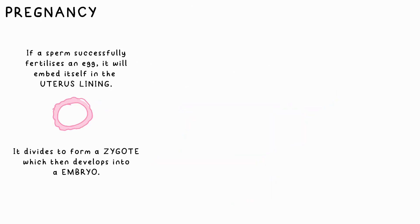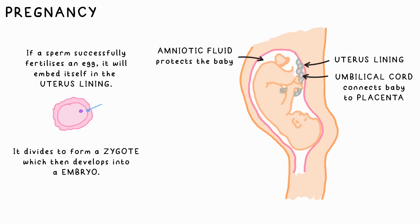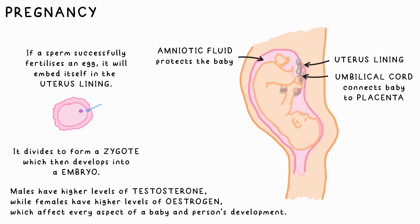If an egg is successfully fertilized, it will embed itself in the uterus lining, where it will divide to form a zygote, and then an embryo. The umbilical cord develops between it and the uterus lining, which has a good blood supply to provide oxygen, nutrients, and everything else the baby needs to grow. Even in the womb, the higher levels of testosterone in a male, or oestrogen in a female, determines the baby's physiology.